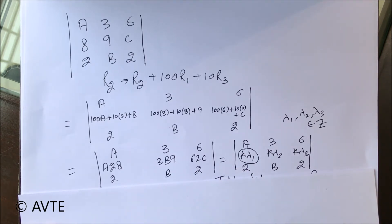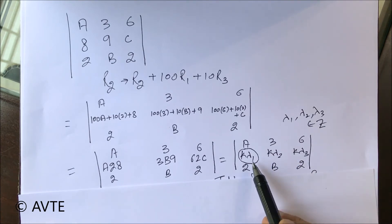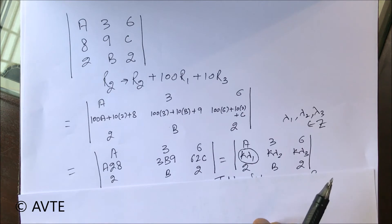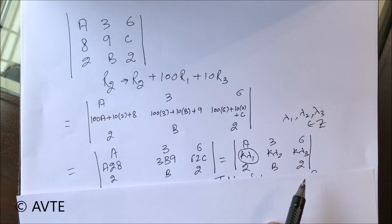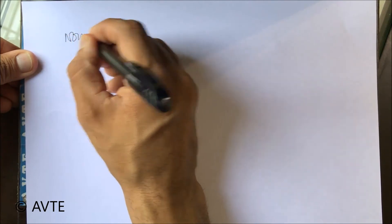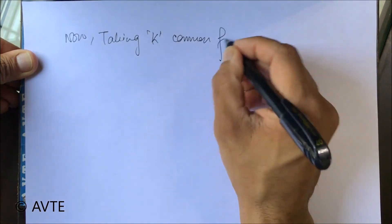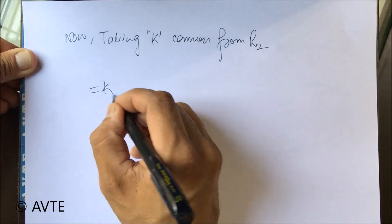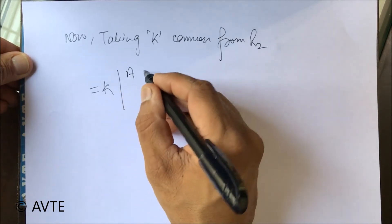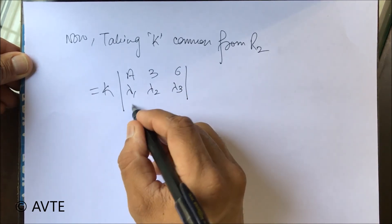Now since each number is divisible by k, we replace them with k×λ1, k×λ2, and k×λ3, where λ1, λ2, λ3 are integer constants. So now we can take k common from R2. Taking k common from R2, we get k outside and the row becomes λ1, λ2, λ3, with the other rows a36 and 2b2 unchanged.